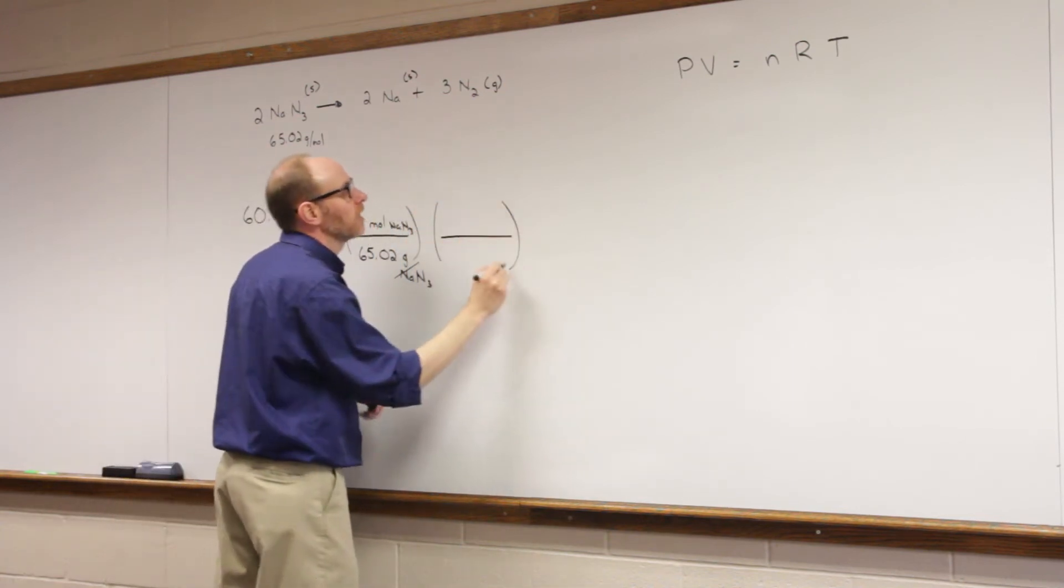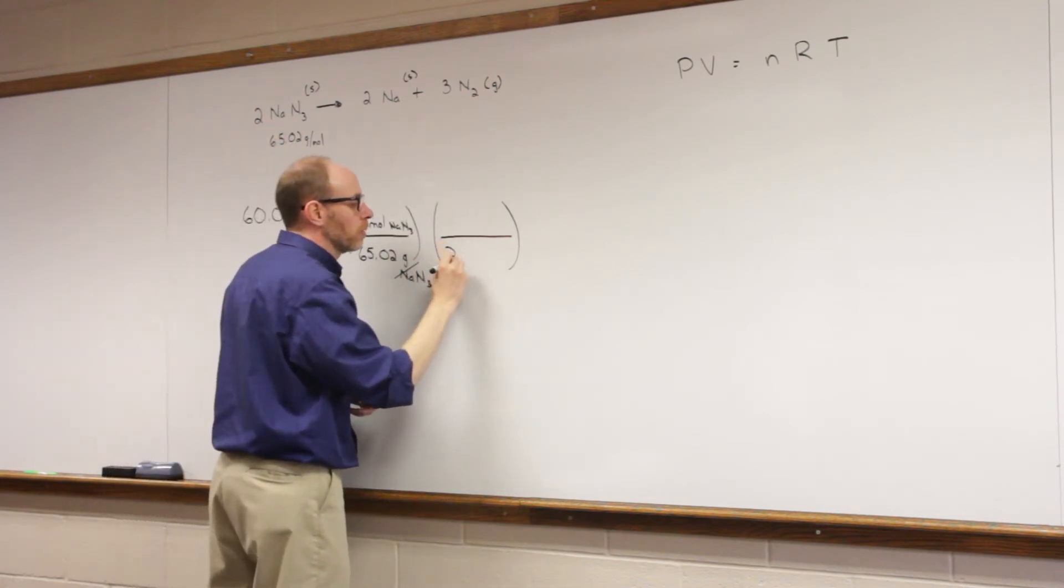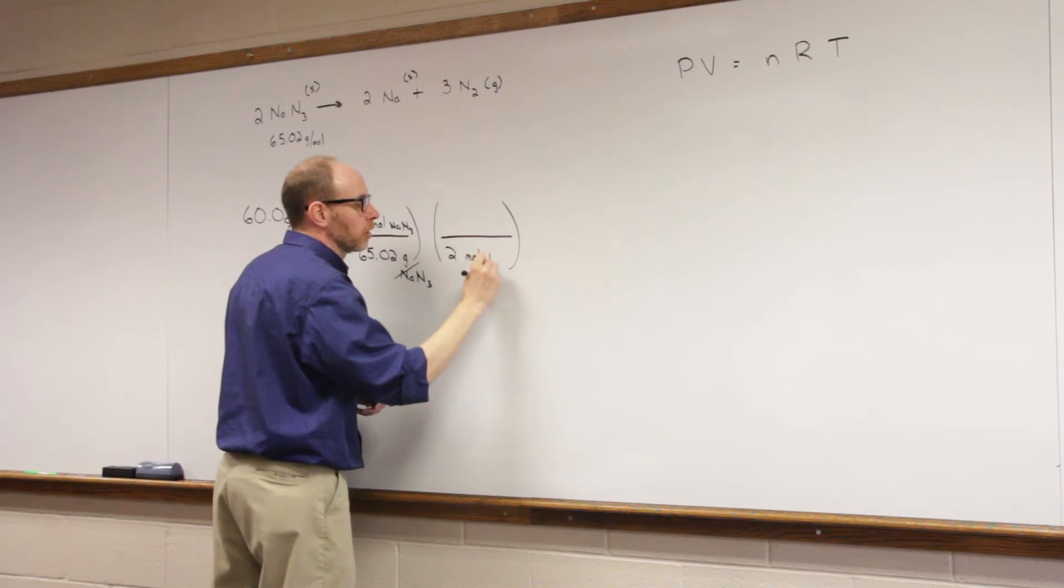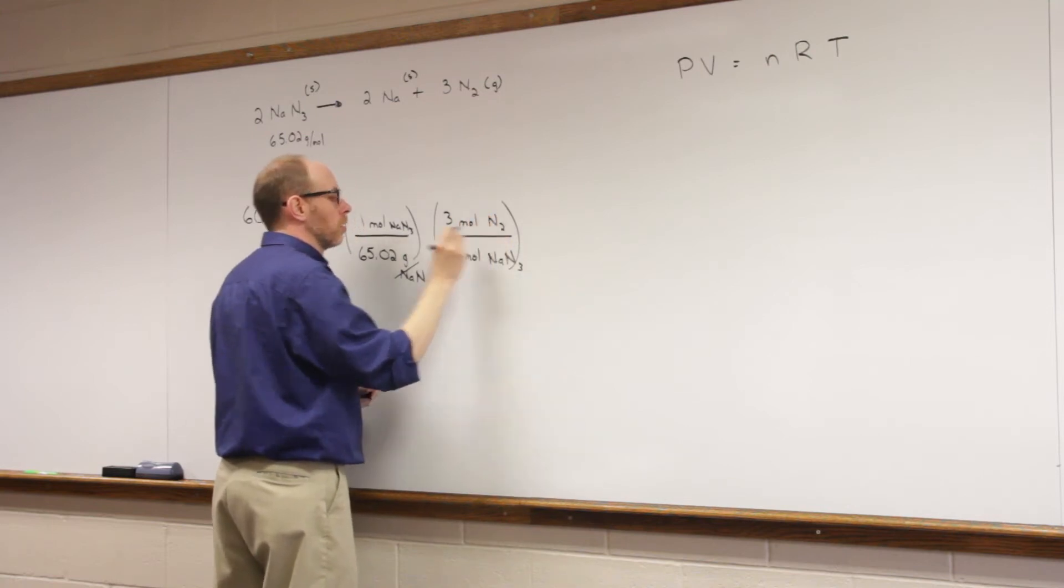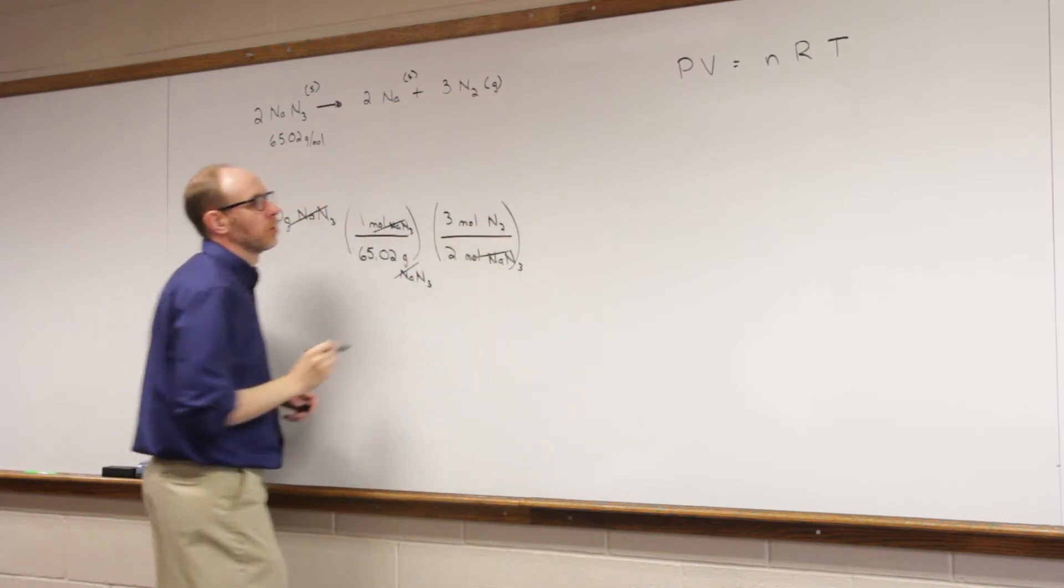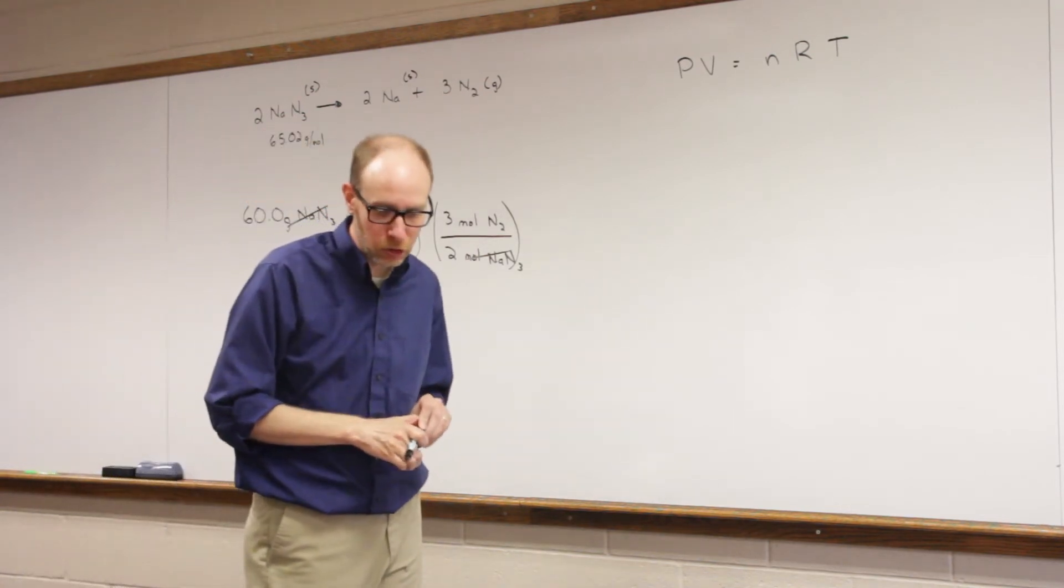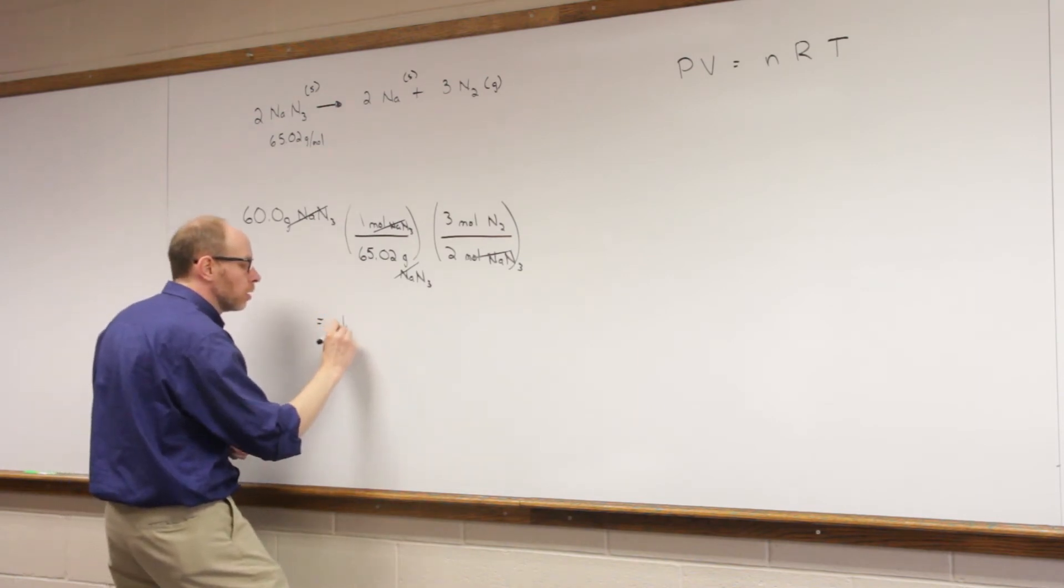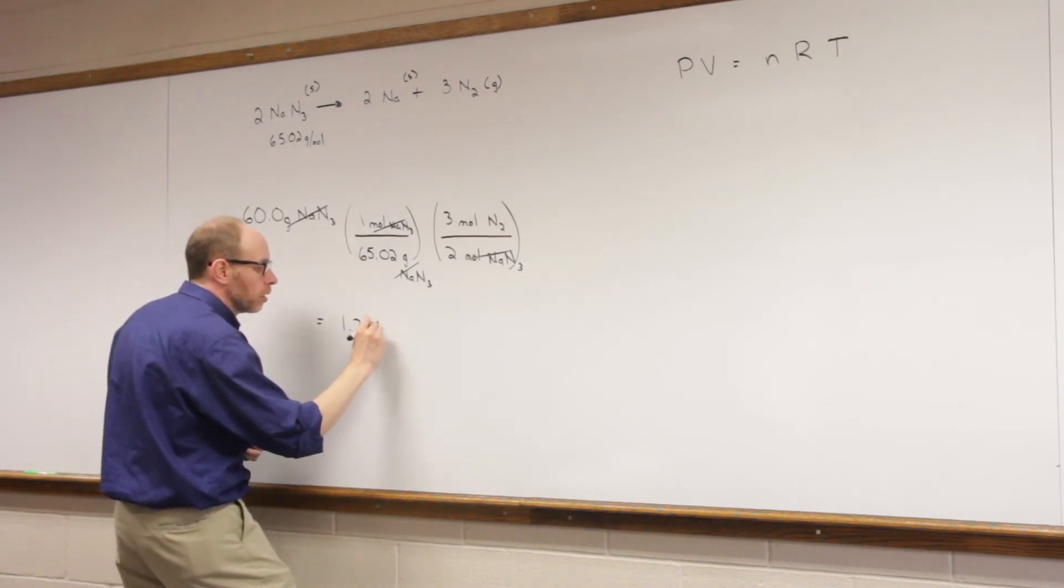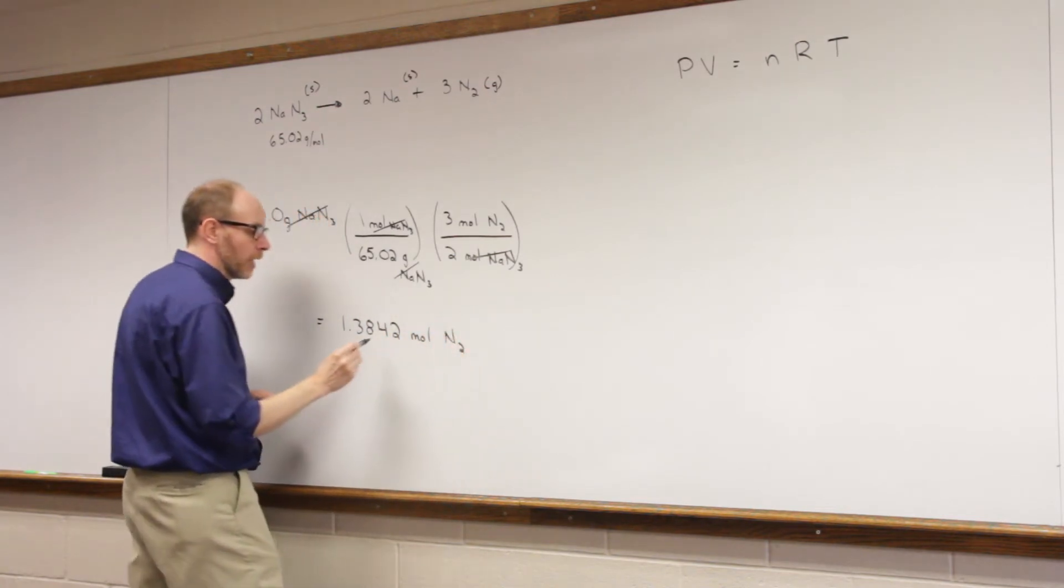Now in the reaction step, two moles of sodium azide produce three moles of nitrogen. So at this point I've calculated how many moles of nitrogen gas are produced, and we should get 1.3842 moles of nitrogen gas produced in the reaction.